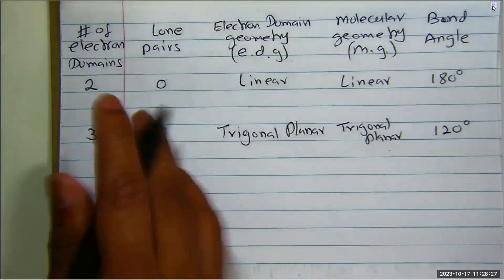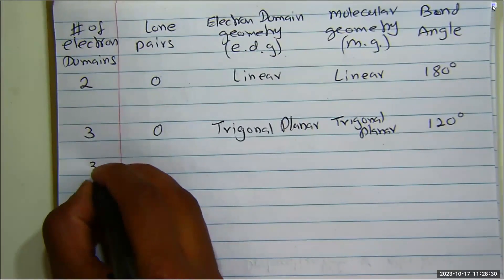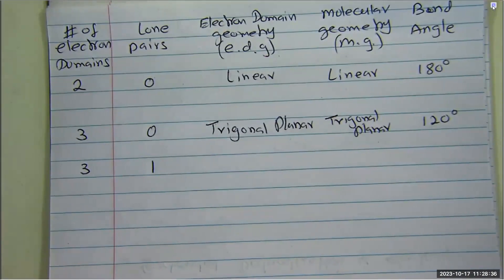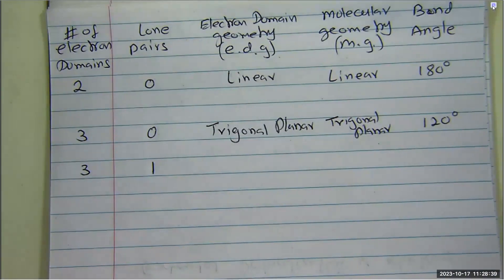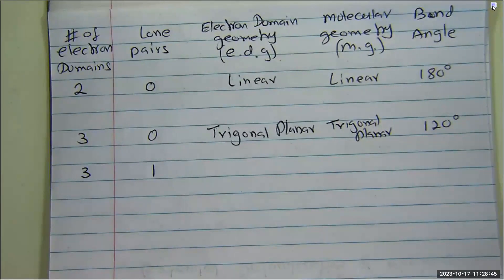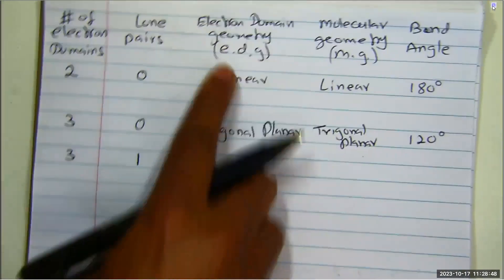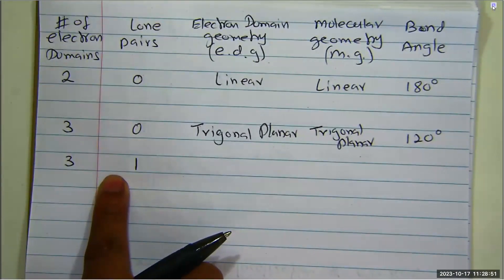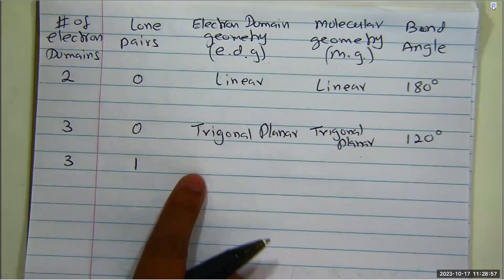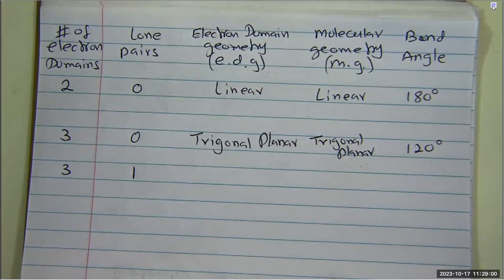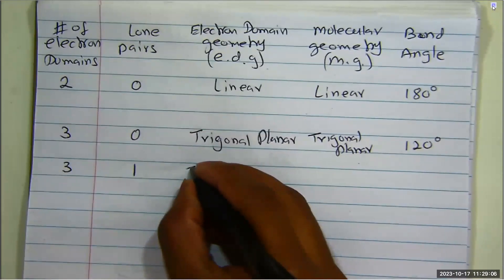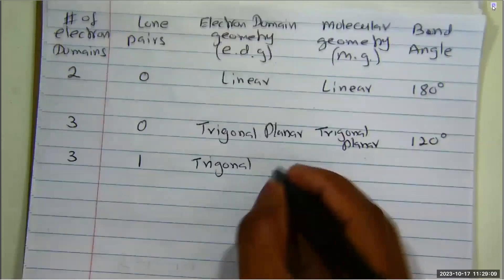Let's do another one with three electron domains. Sometimes we have three electron domains but one of them is a lone pair, just like in SO2. We saw that there are three electron domains and one of those is a lone pair. In this situation, the electron domain geometry would still be trigonal planar — because we still have three electron domains, three balloons in our hand, so they're going to arrange in a trigonal planar geometry.